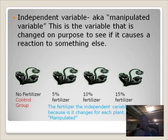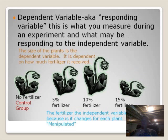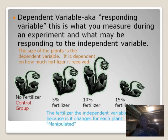The last part of an experiment is known as the dependent variable, also known as the responding variable. This is what you measure during an experiment and what may be responding to the independent variable. For us, we're saying that the plants are growing at different sizes because of the amount of fertilizer they're getting. Looking back at our experiment, we can say the size of the plant is dependent on the amount of fertilizer it's getting.